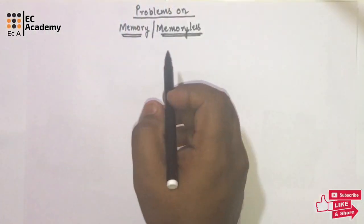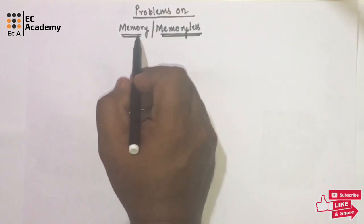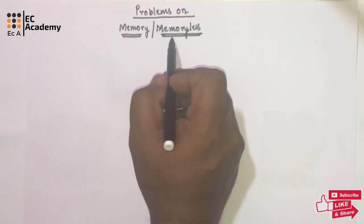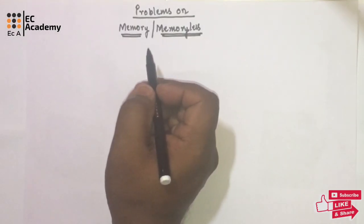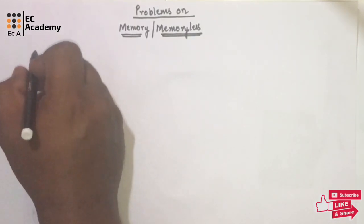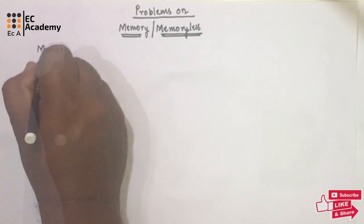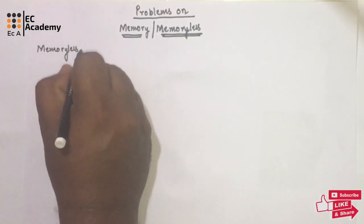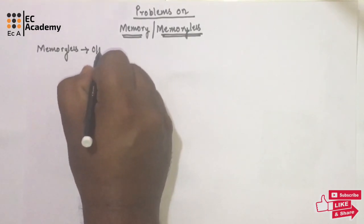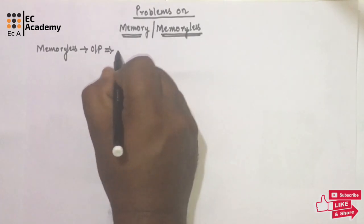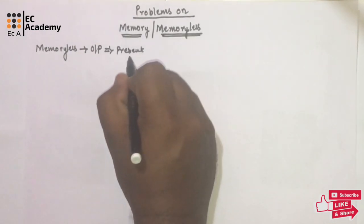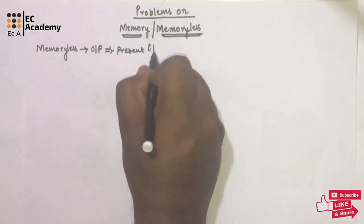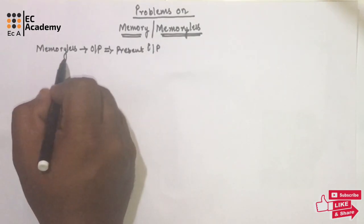Hello friends, welcome to EC Academy. In this lecture, let us understand the problems on memory and memoryless systems. A system is said to be memoryless if the output of the system depends upon only the present value of the input.